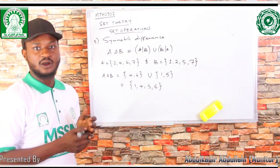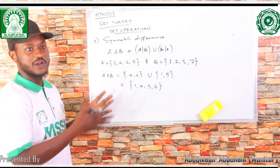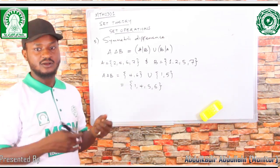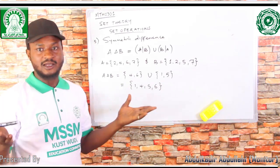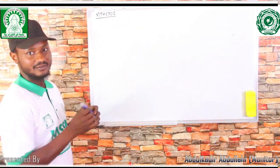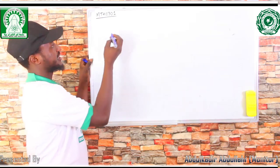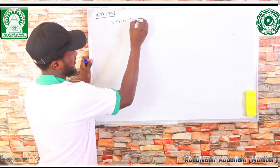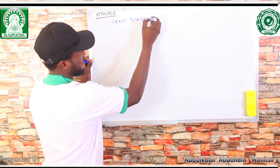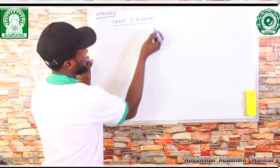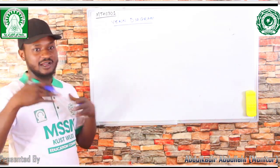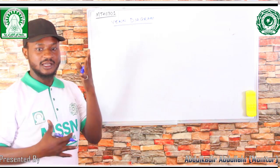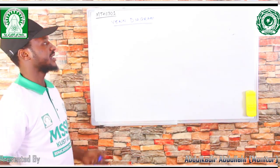We have now come to the end of the set operations. The next topic we are going to look at is Venn diagrams. A Venn diagram is a diagrammatical representation of a set, used to represent sets inside a diagram.